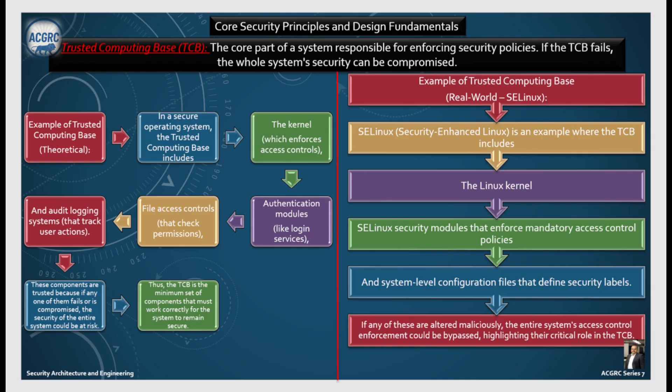For a theoretical example: in a secure operating system, the Trusted Computing Base includes the kernel which enforces access control, the authentication module such as login services, the file access control that checks permissions, and the audit logging system that tracks user actions. These components are trusted because if any one of them fails or is compromised, the security of the entire system could be at risk. Thus, the TCB is the minimum set of components that must work correctly for the system to remain secure.